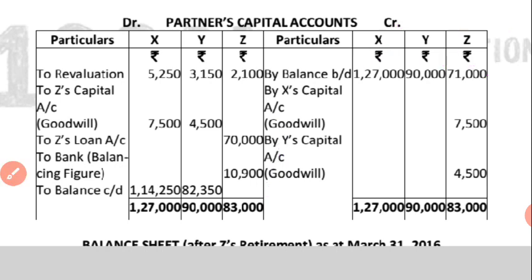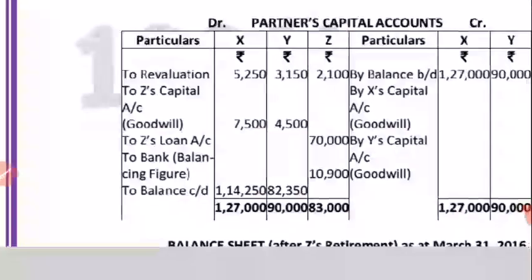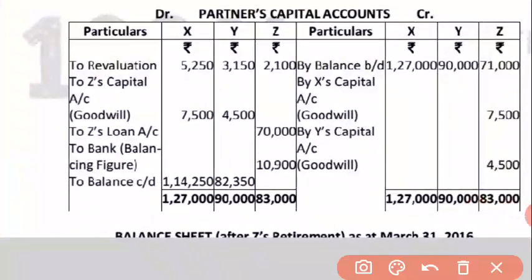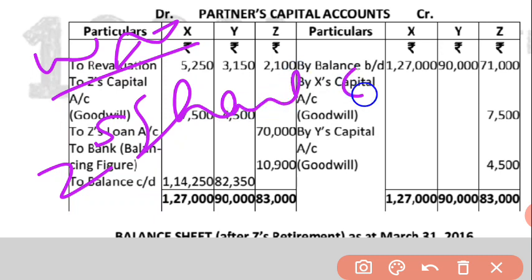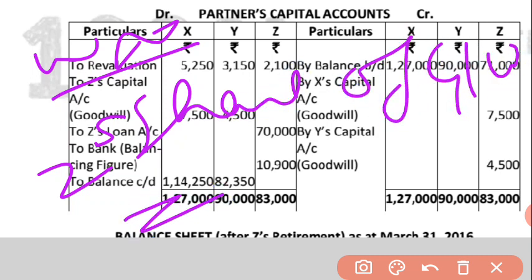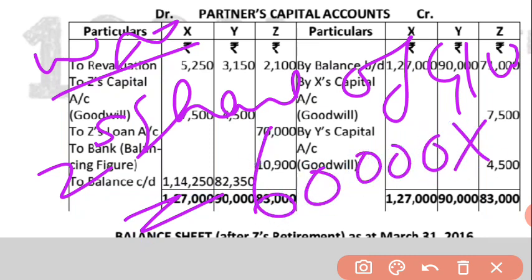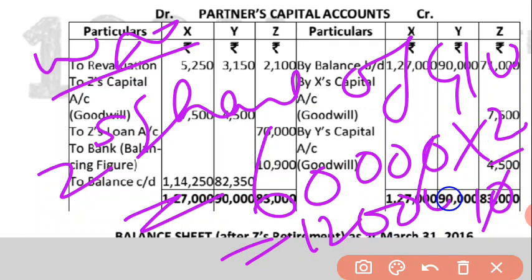In the working note, write Z's share of goodwill. The firm's goodwill is 60,000 and Z's share in the profit ratio of 5:3:2 is 2/10. So Z's share of goodwill = 60,000 × 2/10 = 12,000.